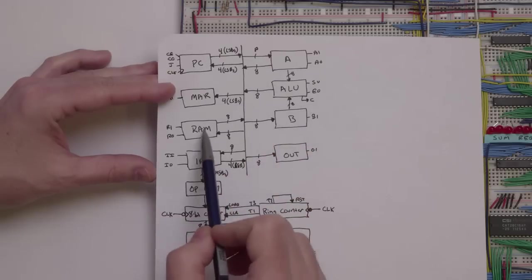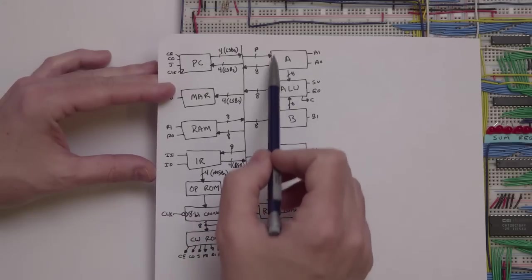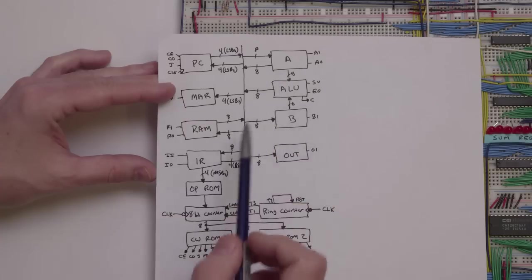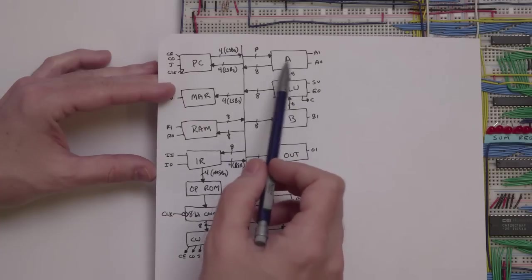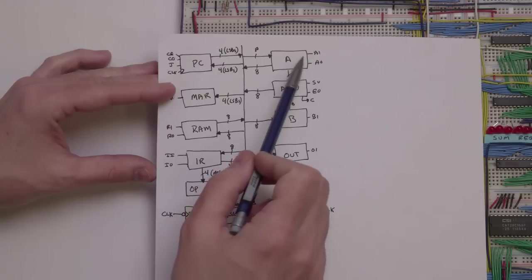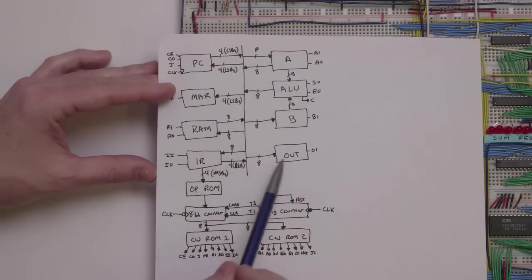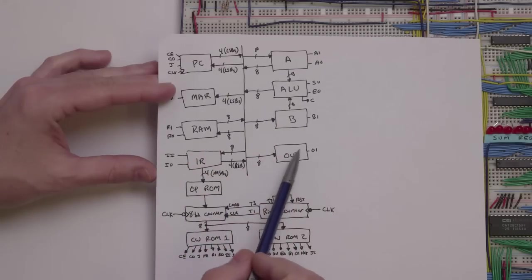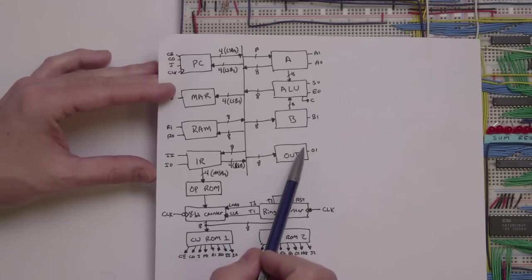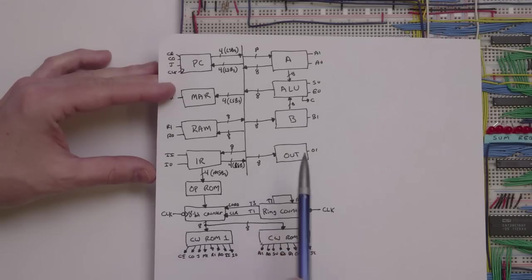Then we could add another value to B and keep adding numbers. If we get a result that we want, we could tell the A register to put its information on the bus and tell the output register to read that information from the bus. That will display the result of that computation.